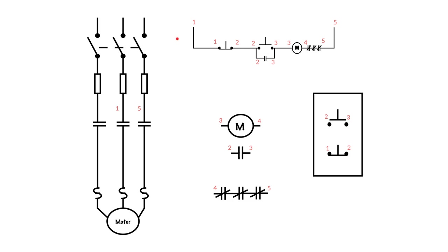We take the numbers assigned in our schematic and place them into the circuit itself. Our stop has a one and a two, so we go one and two there. Our start, which is a two and a three, goes two and three there. Our M coil, which is three and four, gets three and four. Our holding contacts (or sealing or auxiliary contacts) get two and three. Our three phase overload set gets four and five. Then we have power, which we're grabbing from one and five — full voltage, taken directly from the power circuit.